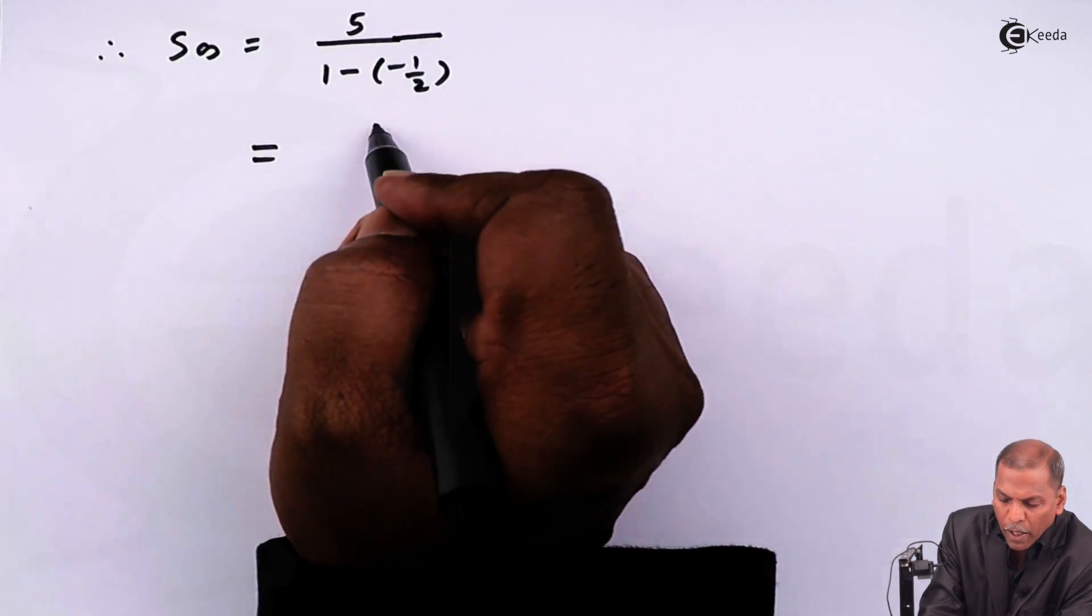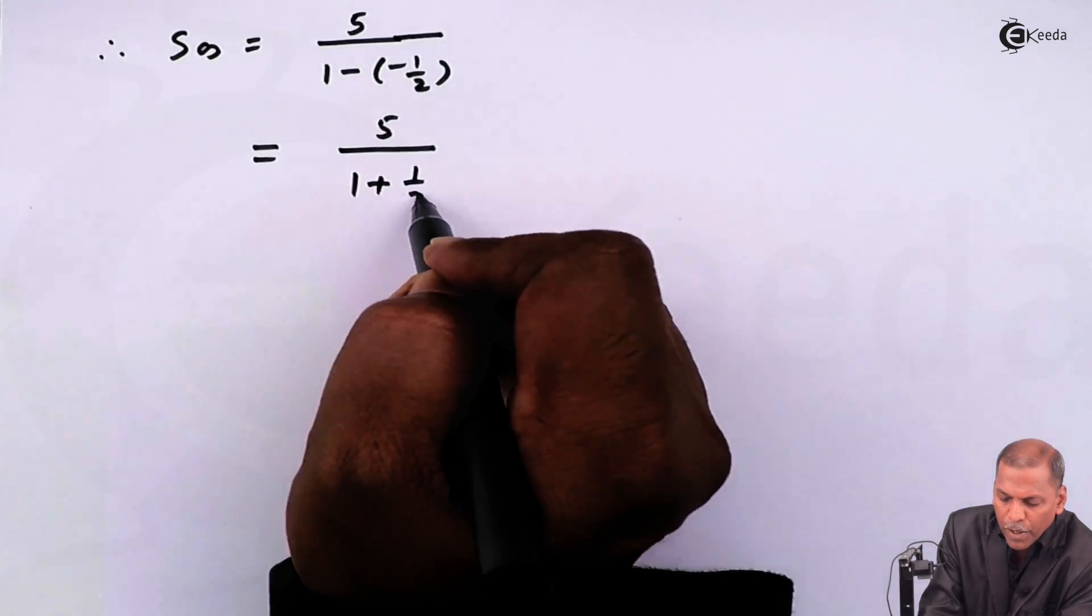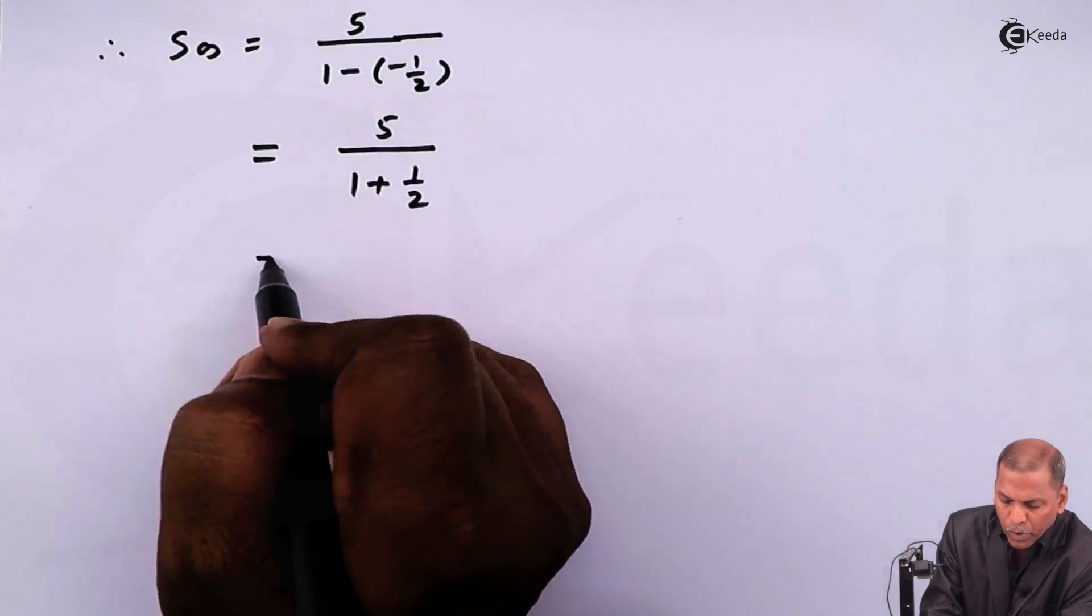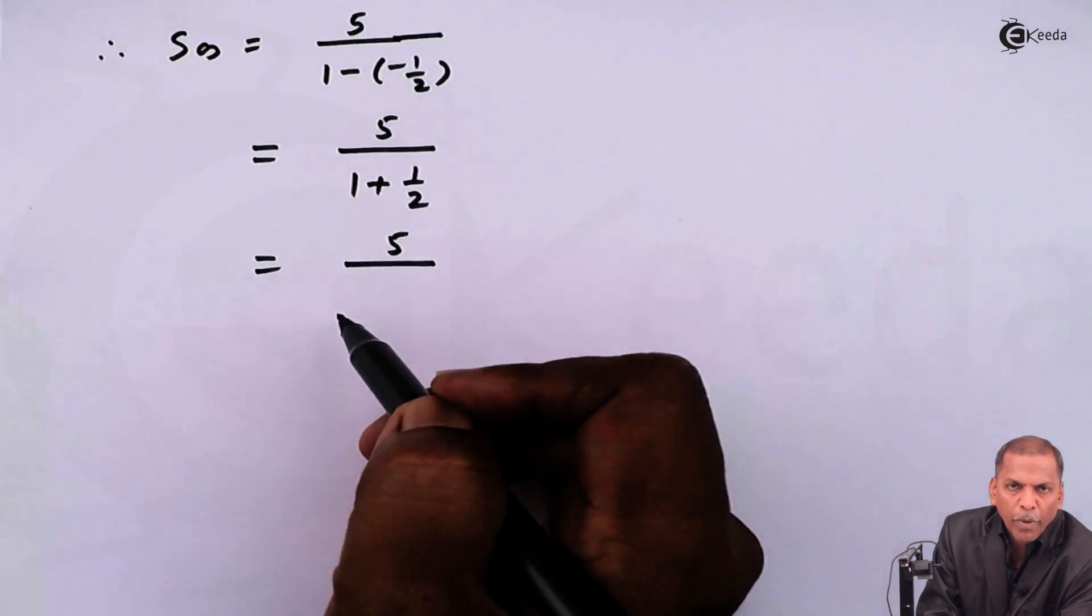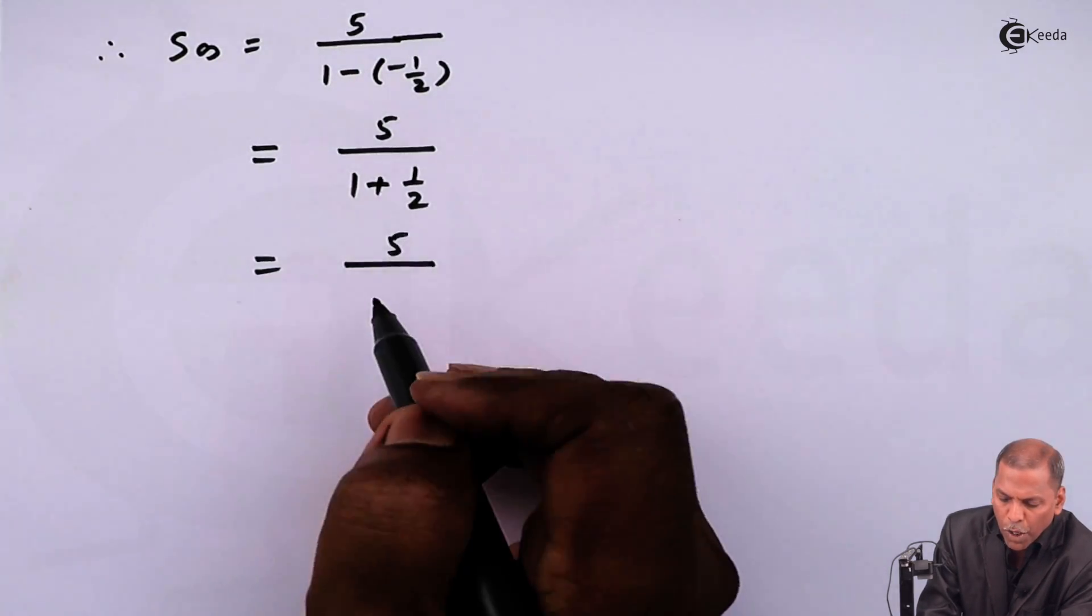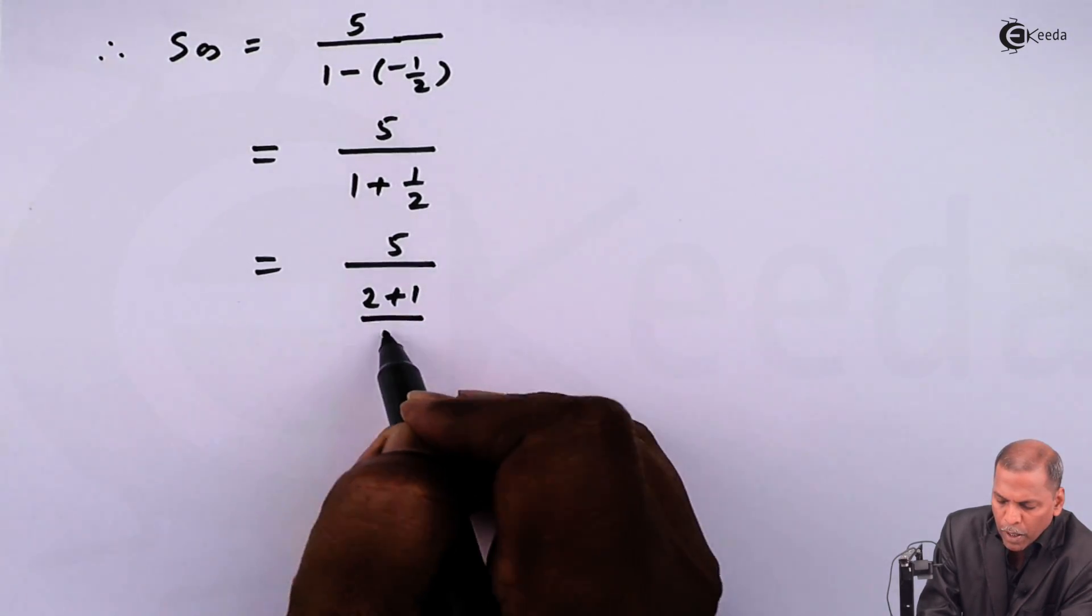So that equals 5/(1+1/2). Now in the denominator, we go for cross multiply, then we have (2+1)/2.